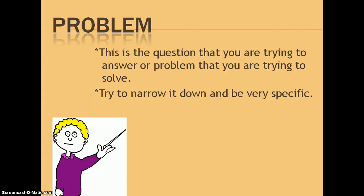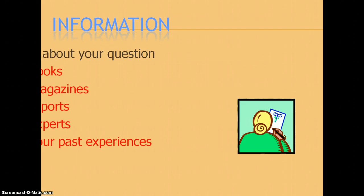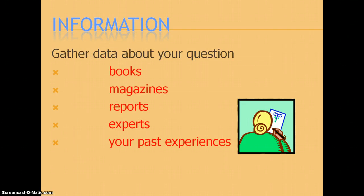The first one: you have some kind of problem. It's the question you're trying to answer or the problem you're trying to solve. What's the problem? Or what am I trying to answer? And you try to narrow it down. The more general you are, it's very hard to be able to answer that. If it's too general, it's very hard to be able to answer that.